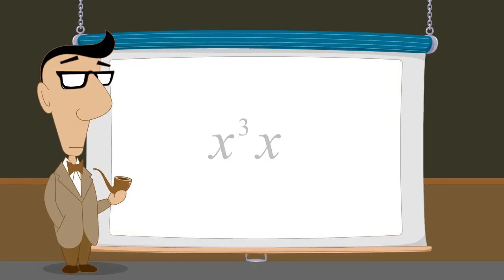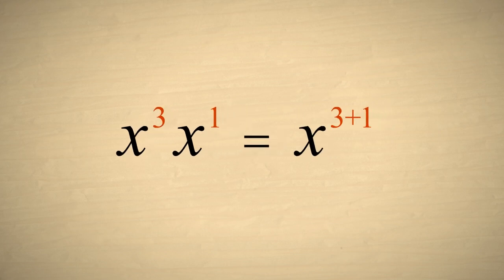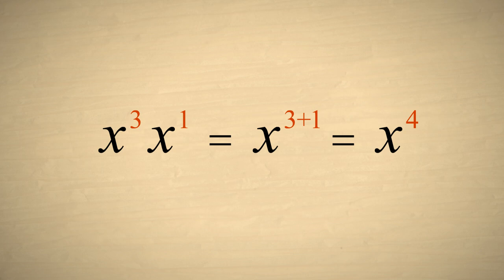For our next example, let's simplify x cubed times x. Since x is the same as x to the first power let's write it that way so that we can add the exponents. Now adding the exponents gives us x to the fourth power.